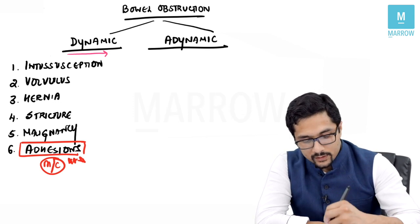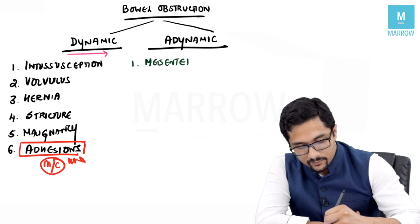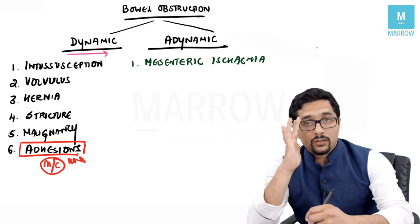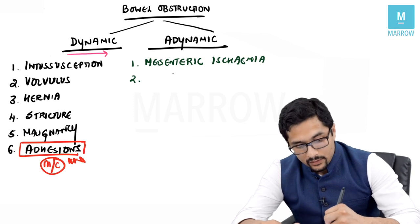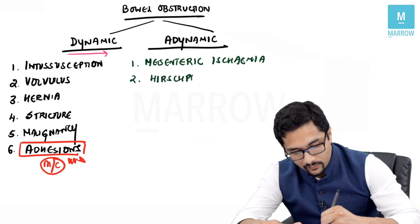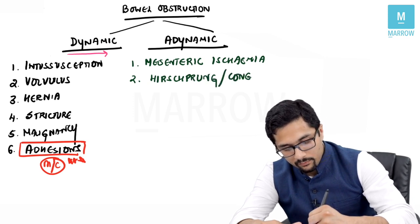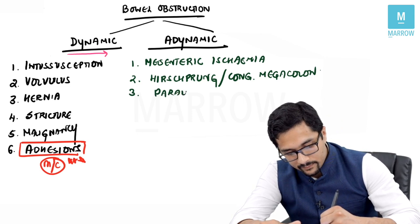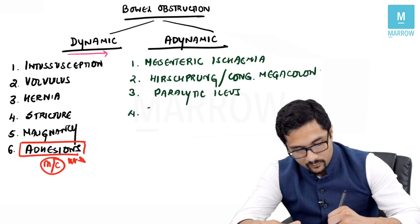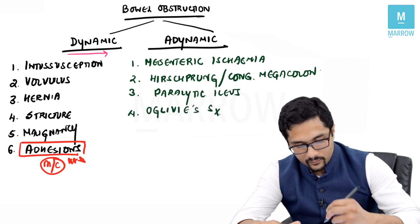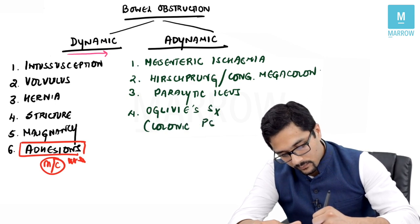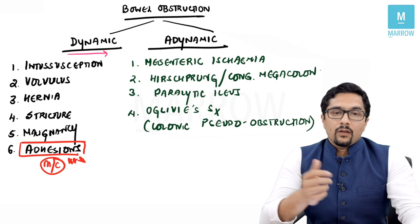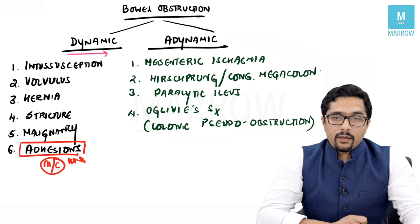The causes of adynamic obstruction are mesenteric ischemia — meaning no blood supply to the bowel — Hirschsprung's disease (congenital megacolon), paralytic ileus, Ogilvie syndrome, or colonic pseudo-obstruction. These are the various causes of dynamic and adynamic bowel obstruction.